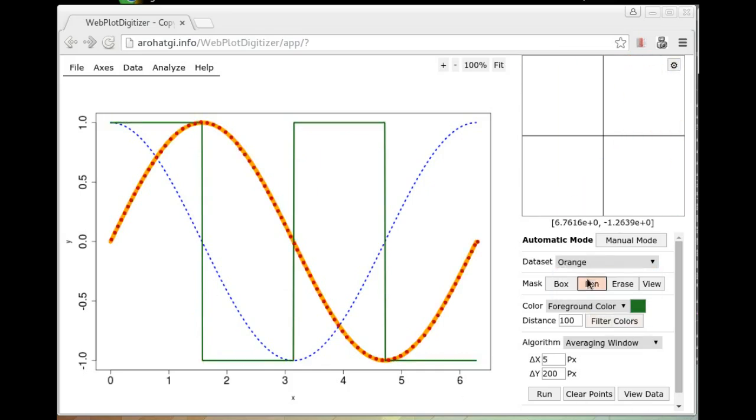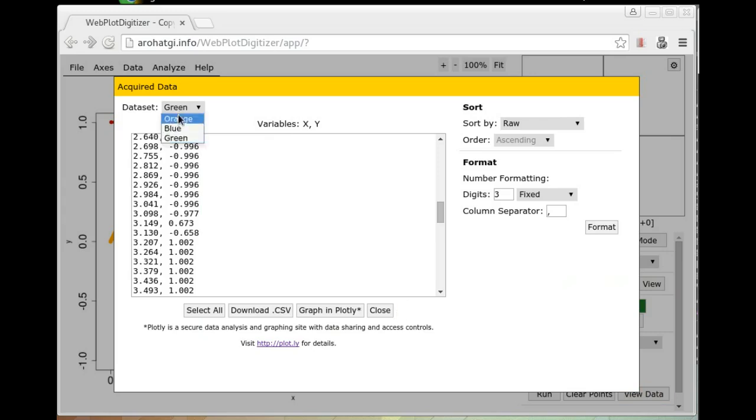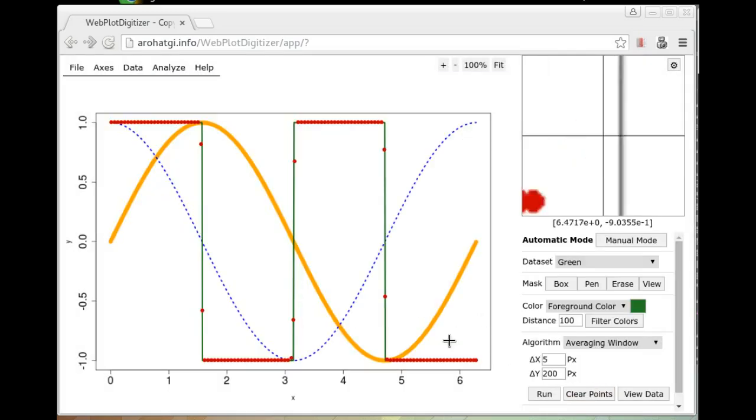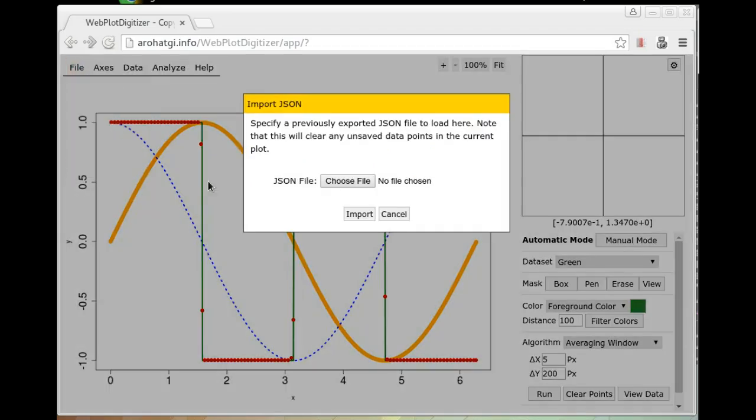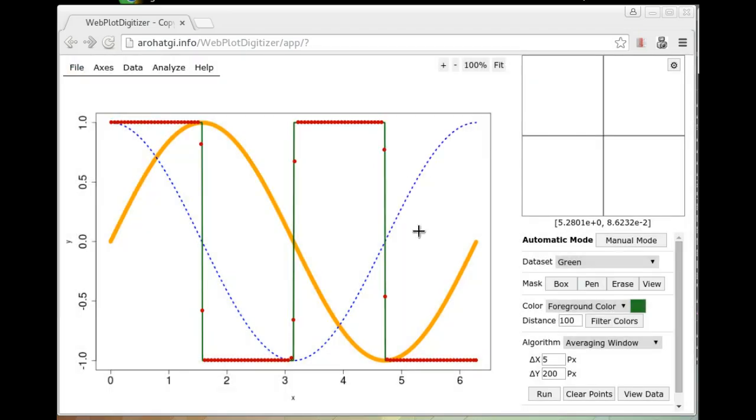Now we can switch between these three and see it for orange, blue, and green. We can also when we view the data, we can also switch the data set between orange, blue, and green. The most beneficial thing of doing this is when you export the data as a JSON file. This will now export the values for all three curves, orange, blue, and green. You can also import that file back in and resume work at a later time.